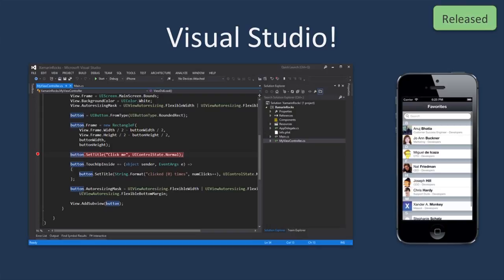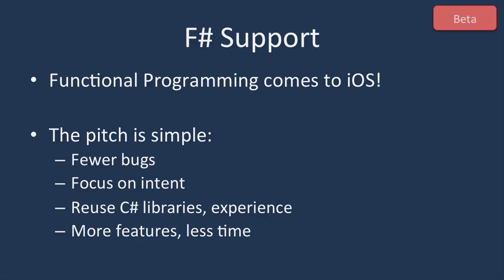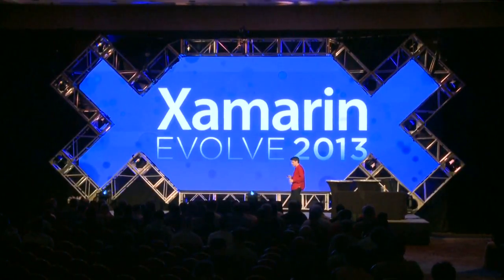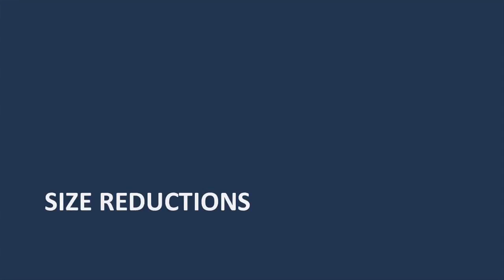This year we released our support for Visual Studio — we're very excited about that, and we already talked about it in the keynote. That's available in our release version. On our beta, we added F# support, also touched on in the keynote. The idea is you get fewer bugs, write fewer lines of code, and continue to use all your libraries from C#. Or you can build your libraries in F# and build a UI in C#. Now let's talk about size reductions.